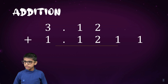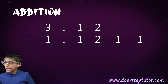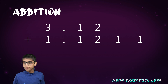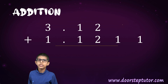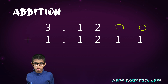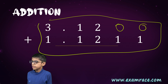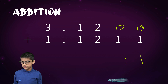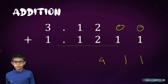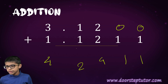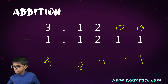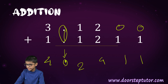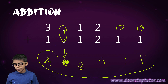Now let's do addition of decimal numbers. I have two decimal numbers: first is 3.12 and the next is 1.1211. Addition is very simple — first put two zeros to make a rectangle around it. Then: zero plus one is one, zero plus one is one, two plus two is four, one plus one is two, three plus one is four. We forgot the decimal point — that is the main thing. The decimal points come down, so the answer is 4.2411.